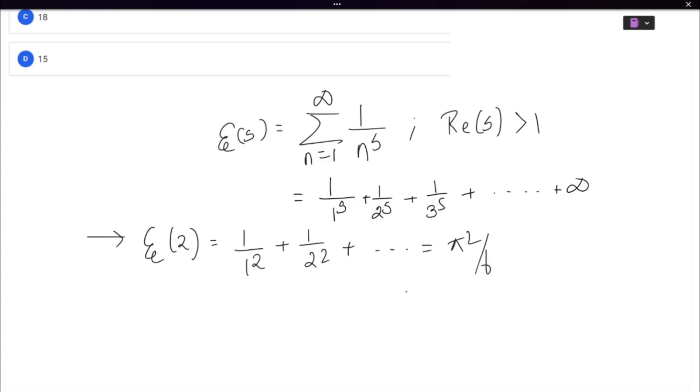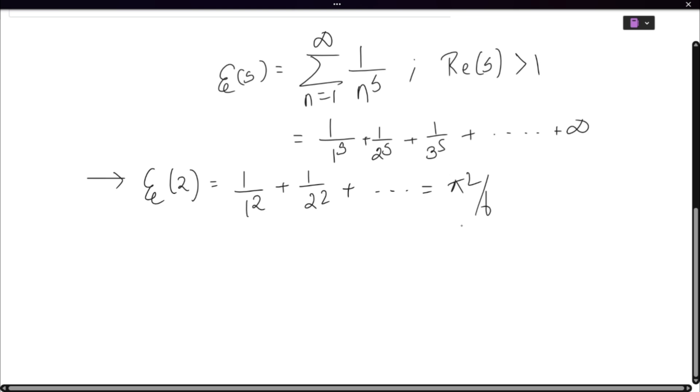Zeta 3, zeta 5, like other values, we have no closed form in terms of known mathematical constants. So zeta 3 is called Apéry's constant. In a similar manner, zeta of 4 is pi to the power 4 by 90.